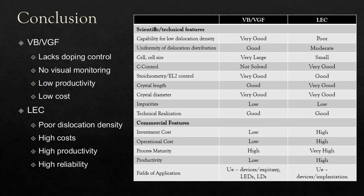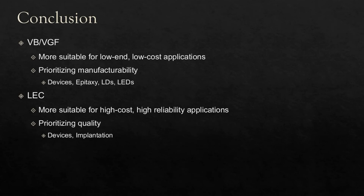On the other hand, the LEC method has poor dislocation density control, which can negatively affect the electrical properties of the grown GaAs crystals, making it less favored for applications like solar cell manufacturing. Additionally, its investment and operational costs are high, but this comes with high productivity. Both methods are suitable for GaAs device manufacturing, but the more appropriate technique depends on device requirements. The Bridgman methods are suitable for low-end and low-cost applications where quantity is prioritized over reliability, while LEC is preferred for high-cost, high-reliability applications where quality is prioritized.